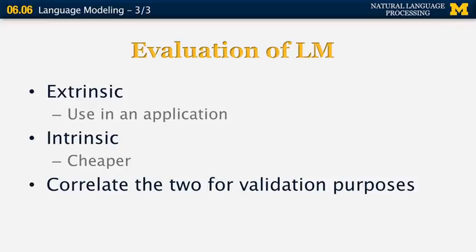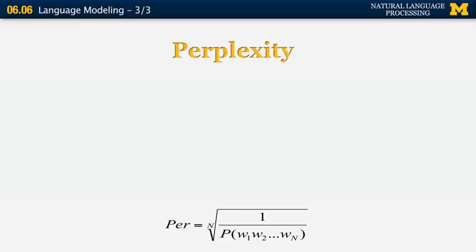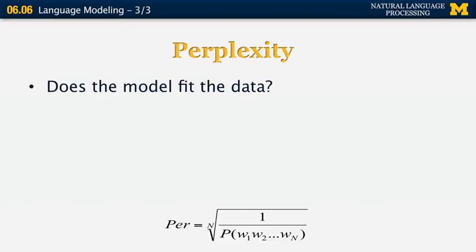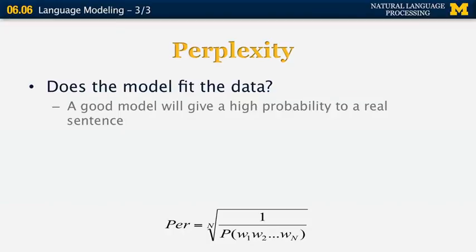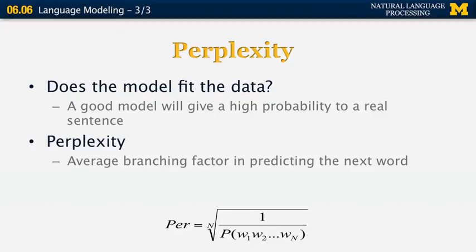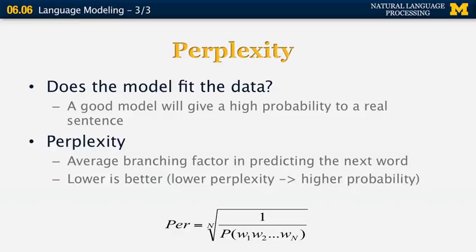Let's see some of the intrinsic methods. The most commonly used method is known as perplexity. The perplexity is given by this formula: we take the joint probability of all the words in a sentence, take the reciprocal of it, and then take the nth root of that number. This is an estimate of how well the model fits the data. A good language model gives a high probability to a real sentence. Perplexity can be thought of as the average branching factor in predicting the next word. Lower perplexity is better because it correlates with higher probability of the sentence.